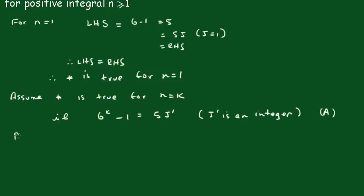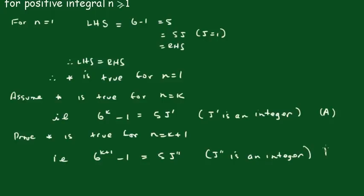Now we have to prove the statement is true for n equals k plus 1. That is, 6 to the k plus 1 minus 1 equals 5j double dash, a different j this time. j double dash is an integer. That's my proof statement.